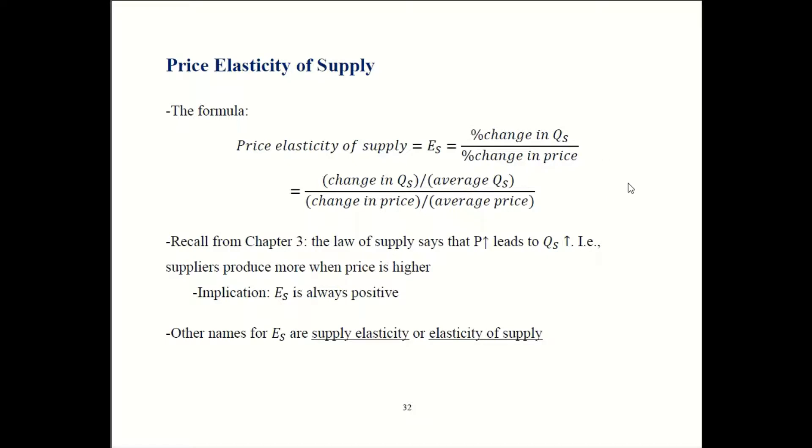The price elasticity of supply is percent change in quantity supplied divided by percent change in price. We get that by taking the change in quantity supplied and dividing that over average quantity supplied. That all gets divided by changing price over average price.